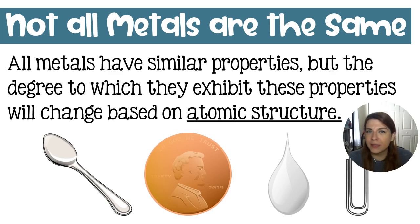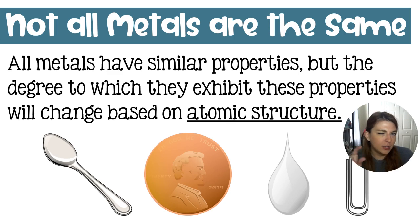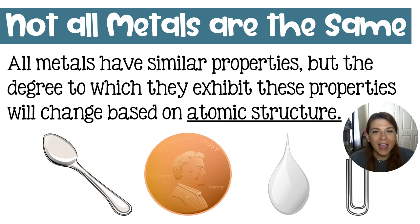Not all metals are the same. Even though metals are going to have similar properties — malleable, ductile, conductive — the specific metal and its internal atomic structure is going to change the degree to which these properties are exhibited. Silver is the most conductive metal, but if you look at silver and copper on the periodic table they're one on top of the other, so they have very similar atomic structure. That's why we often use copper for electrical wiring — copper is just cheaper and easier to come by, and because the two are one on top of the other, it makes sense that they would have similar properties.